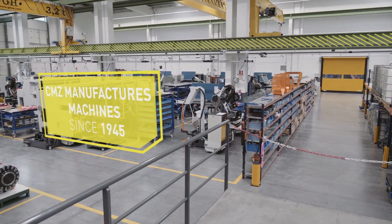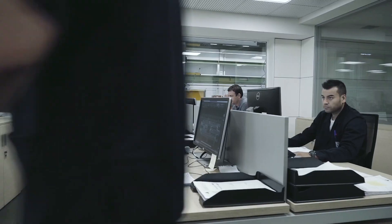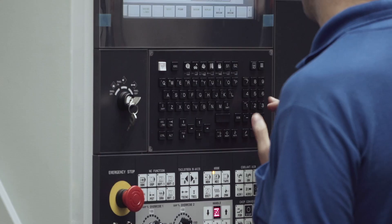CMZ started to manufacture machines in 1945 and we delivered the first numerical control lathe in 1976. Since then we have grown a great deal and become one of the leading manufacturers of numerical control machines in Europe.